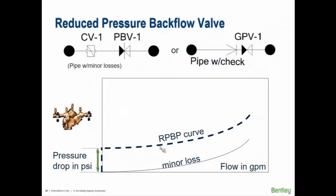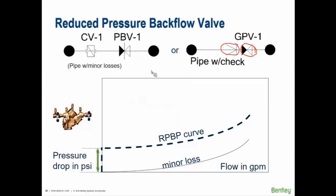A reduced pressure backflow valve — common at wastewater treatment plant washdown areas — can be modeled two ways. One approach: right-click a pipe and add a check valve, then add a general purpose valve inline with additional minor losses to account for the substantial head losses these valves create. Another approach: use an actual check valve and a pressure breaker valve to maintain the behavior of the reduced pressure backflow valve, ensuring flow is never modeled going backwards.